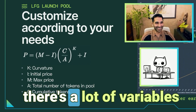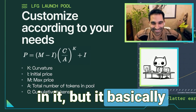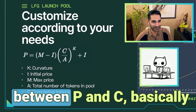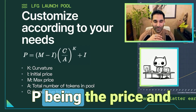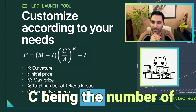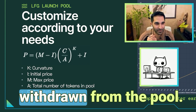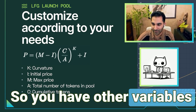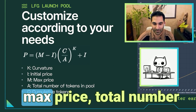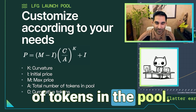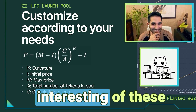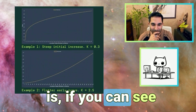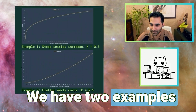Our price curve uses this formula. It looks a bit scary because there are a lot of variables in it, but it basically describes the relationship between P and C — P being the price and C being the number of tokens that have been withdrawn from the pool. You have other variables such as initial price, max price, and total number of tokens in the pool. But the most interesting variable is K, which is the exponent.